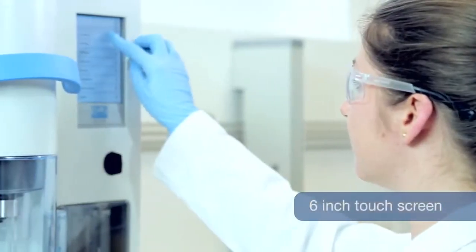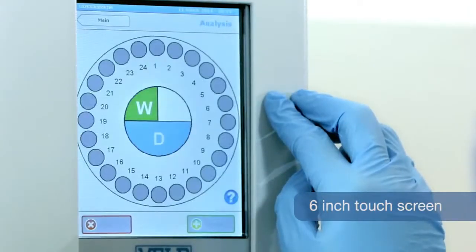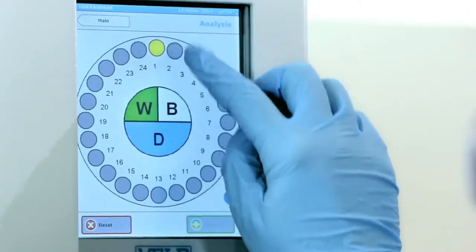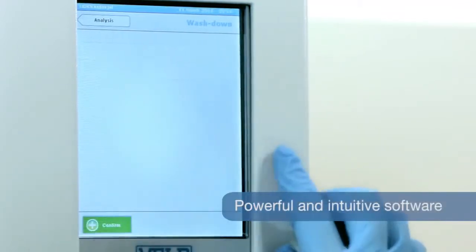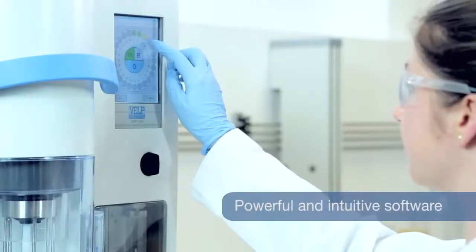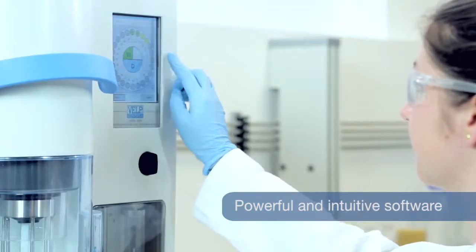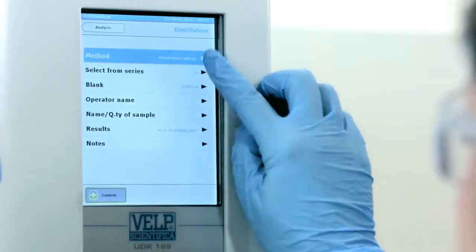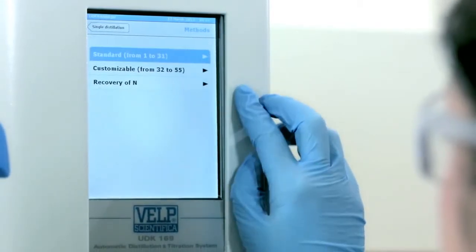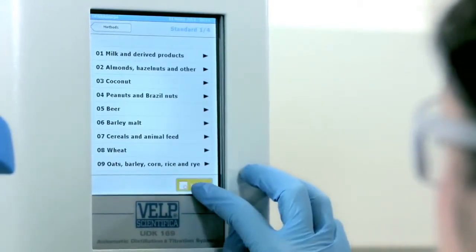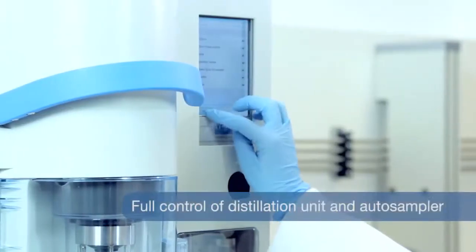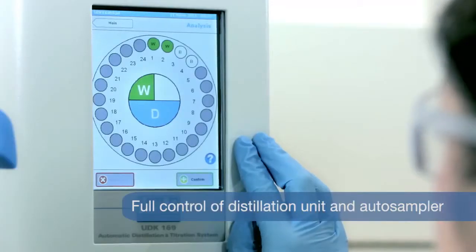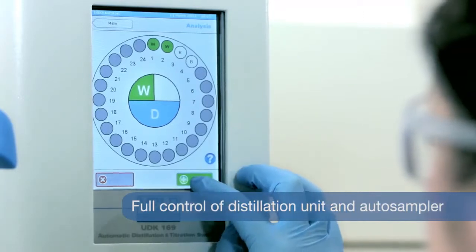Its 6-inch touchscreen gives information on all of the process. Washings and blanks can be programmed very easily. A 55-program library covers the needs of any laboratory with the right mix of customizable and pre-installed methods for the most common applications. The software offers full control of both distillation unit and AutoSampler.